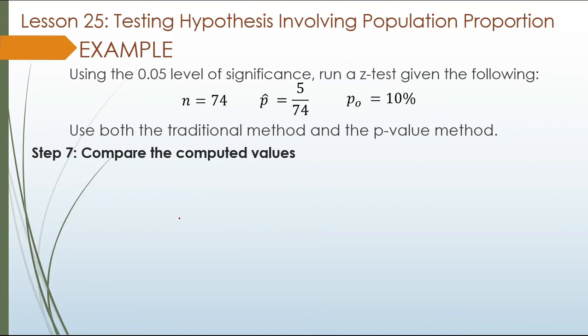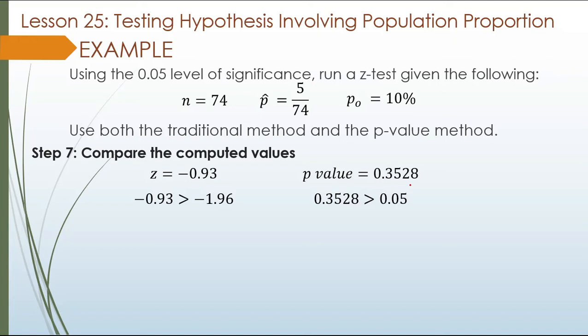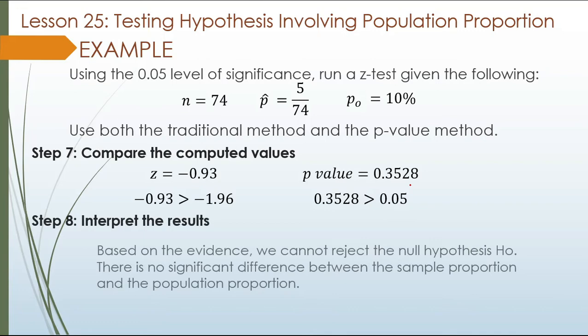Now let us compare the computed values. Our computed z value is negative 0.93. Negative 0.93 is greater than negative 1.96. For the p-value, 0.3528 compared to 0.05 — our p-value 0.3528 is greater than 0.05. Therefore, we cannot reject — we accept the null hypothesis.